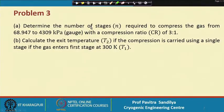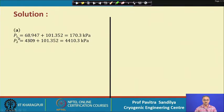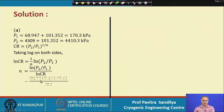In this problem we are asked to determine the number of stages required to compress a gas between two given gauge pressures, with a compression ratio of 3:1. We first find the absolute pressures at both ends of the compressor, then use the formula for compression ratio over n stages. Taking the logarithm of the expression, we find that 2.96 stages are required.